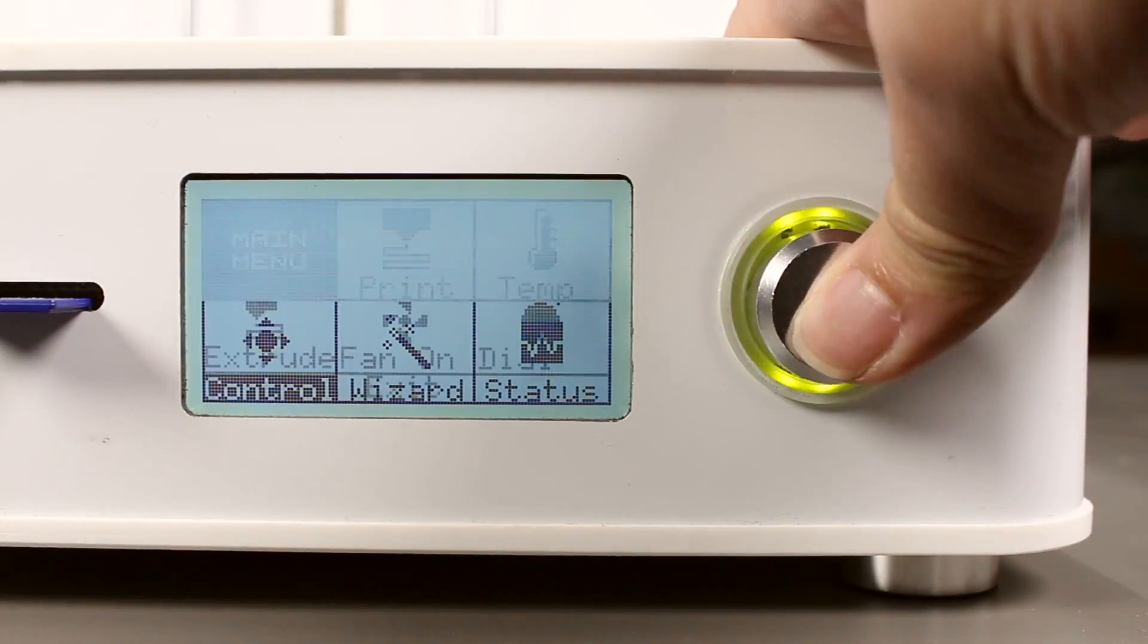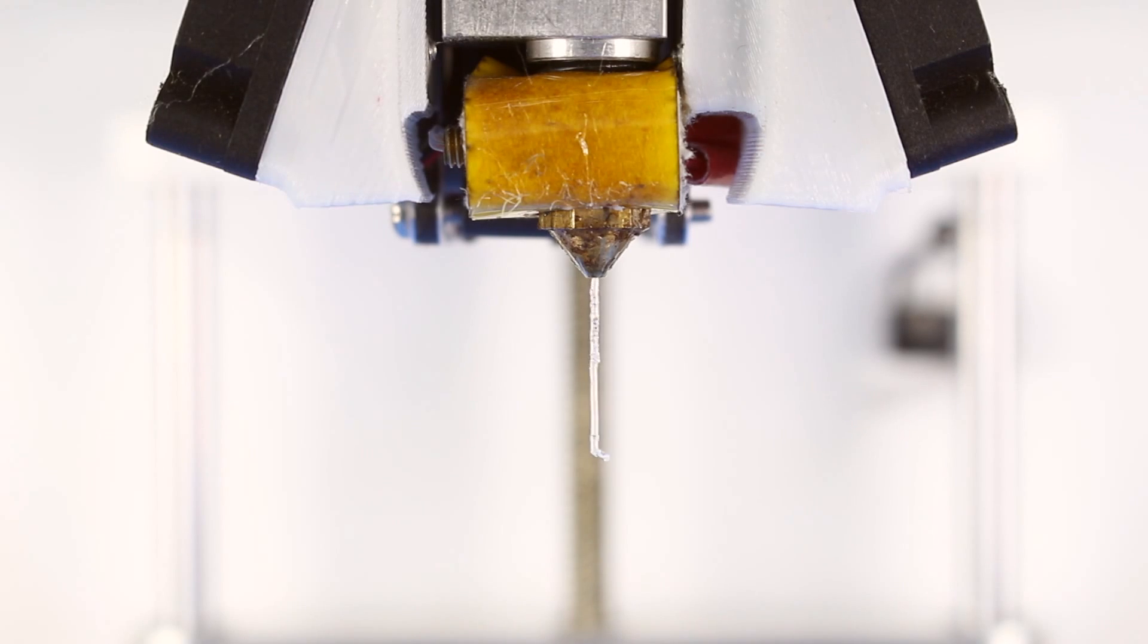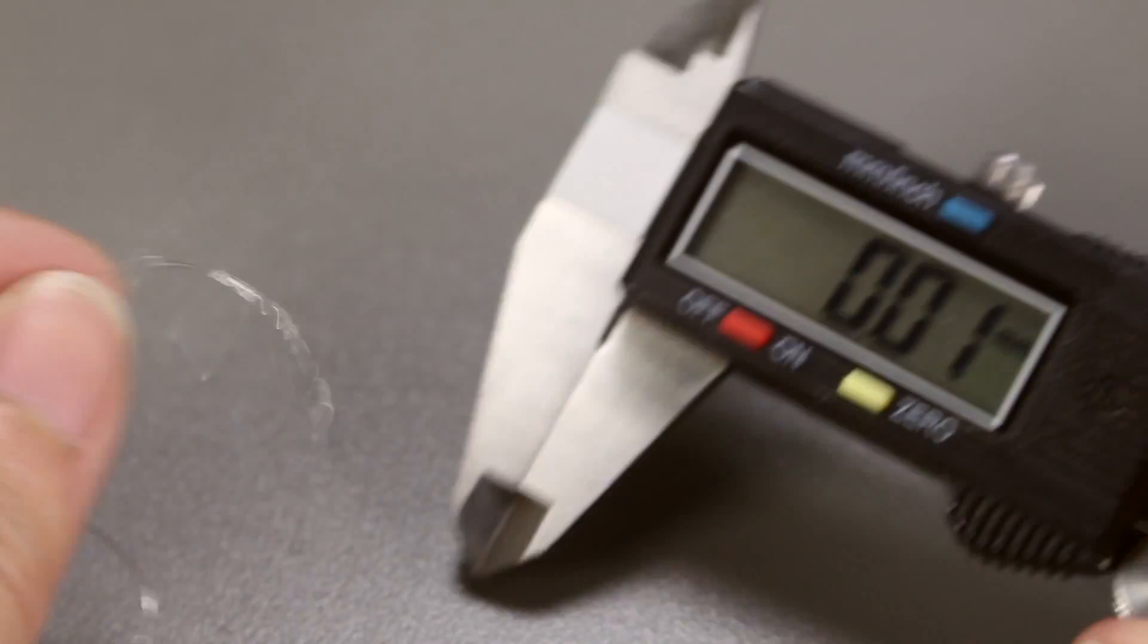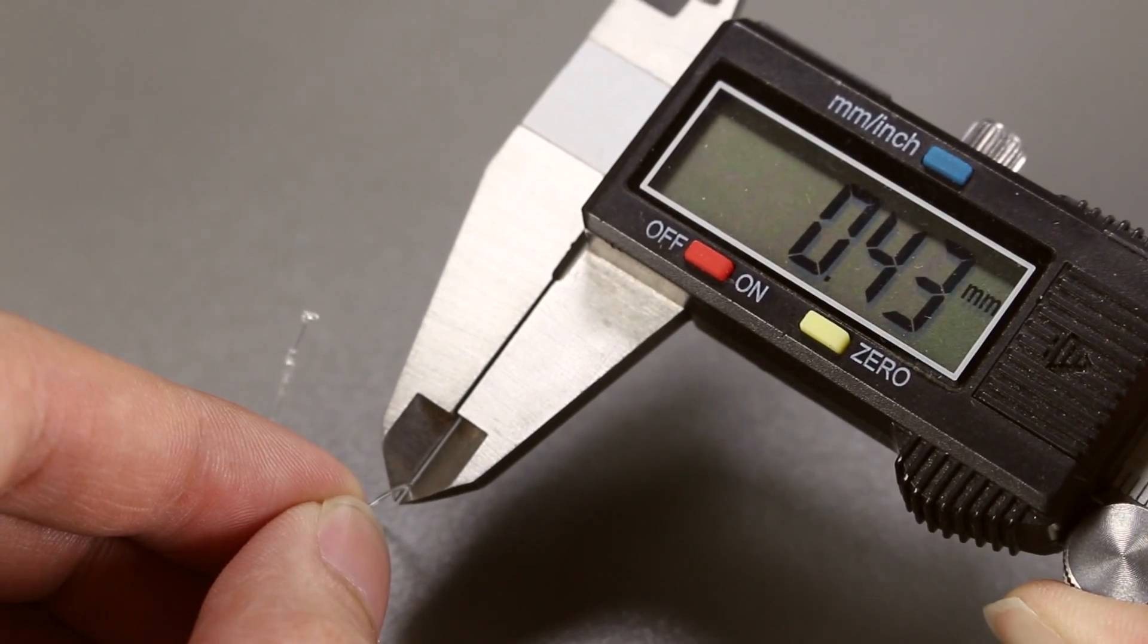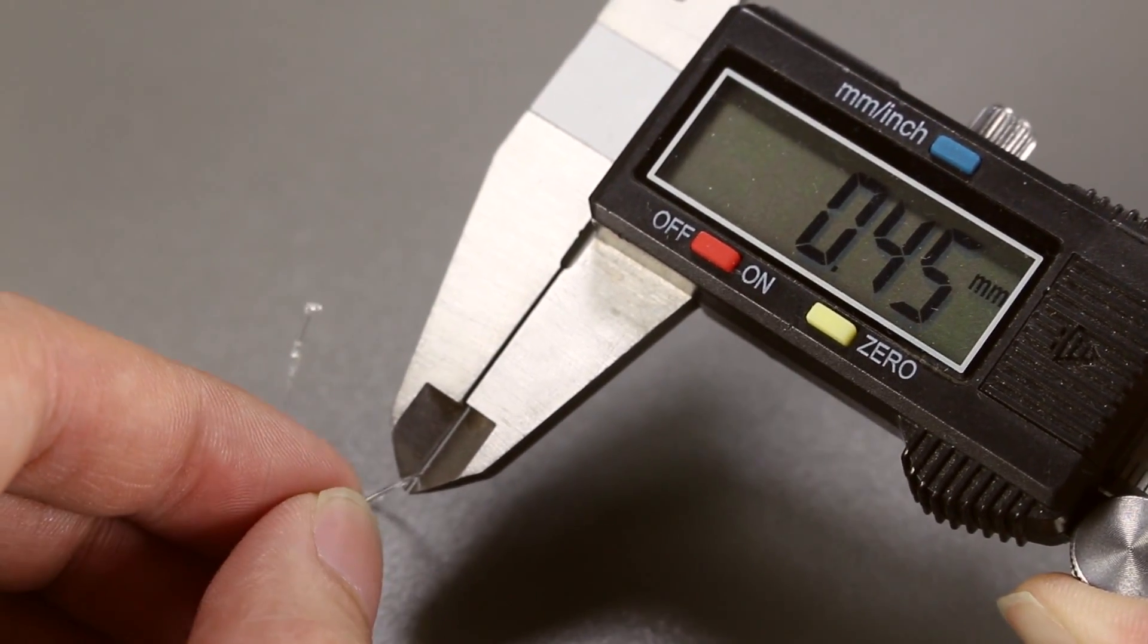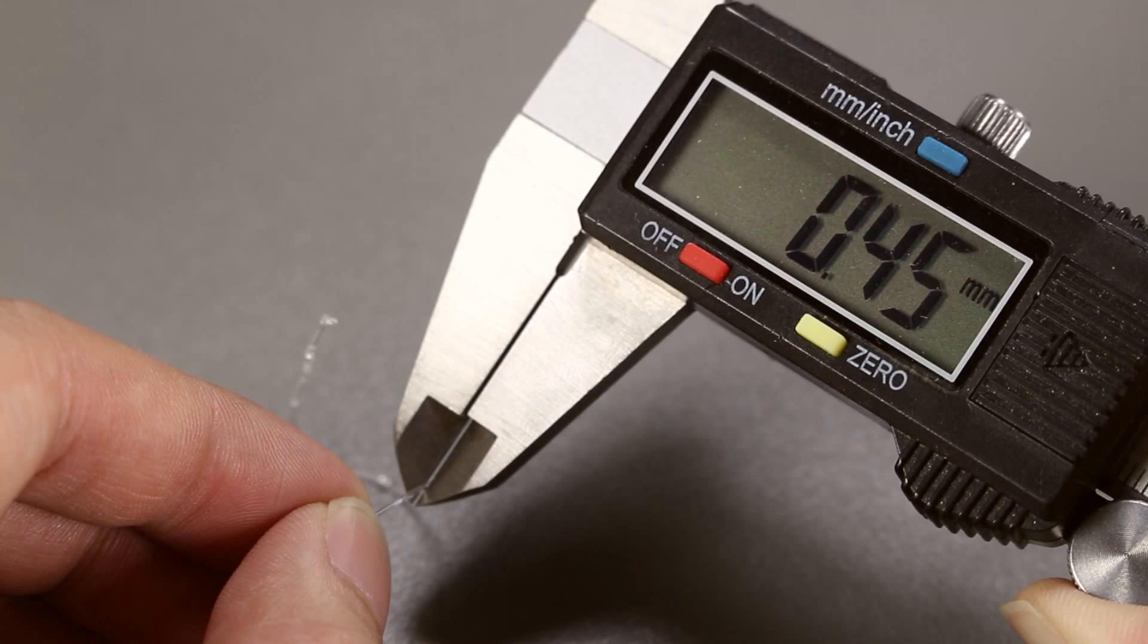Now let's do the extrude wizard once again to find out the nozzle diameter. It's still roughly 0.45 to 0.46mm. Not much of a difference before we started to print the 1.5 hour print.